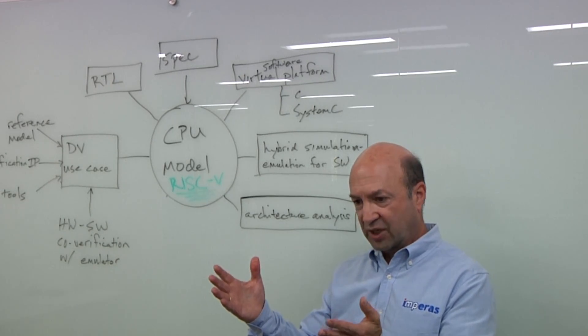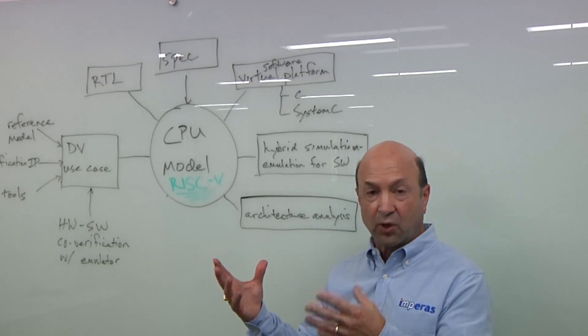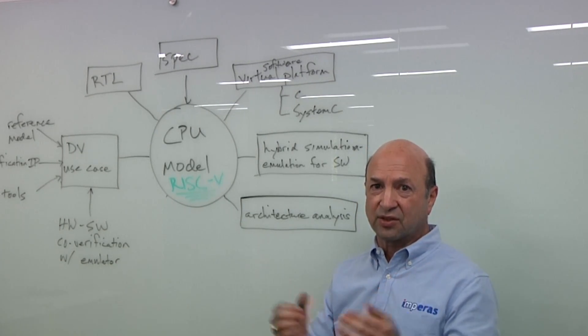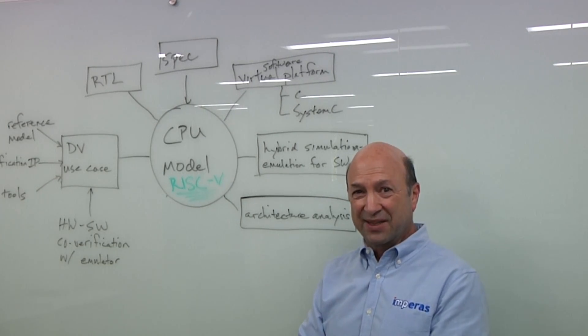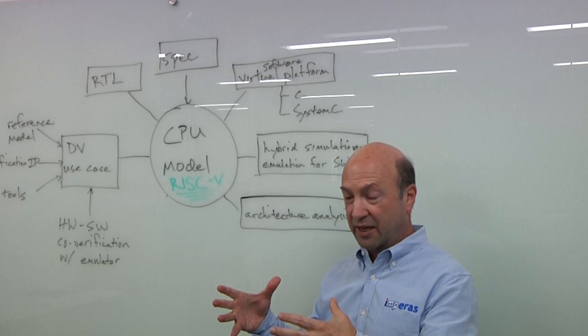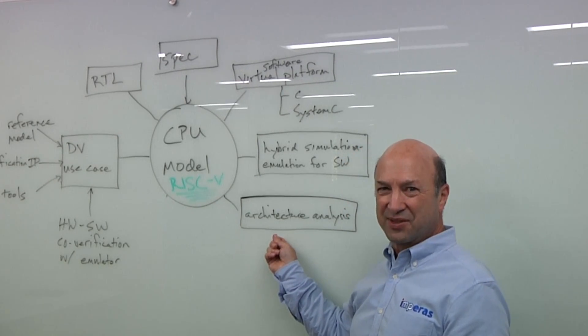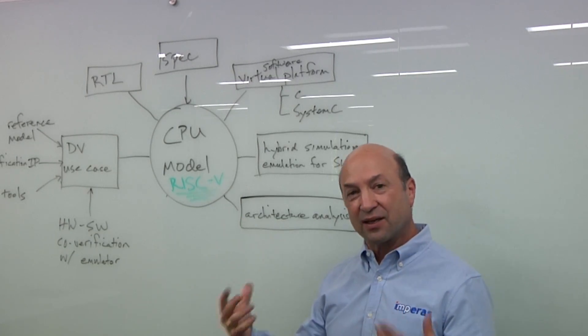Sometimes you want to do that just on a processor-only basis, sometimes processing subsystem. If you're looking at an array of processors architecture for an AI application, sometimes you want to do it on the SOC basis. Sometimes you're doing architecture analysis to optimize the pipeline. Sometimes you're just looking at, should I add this extra custom instruction? This is a big thing to do, and there's a lot to it. It's hard to do also.